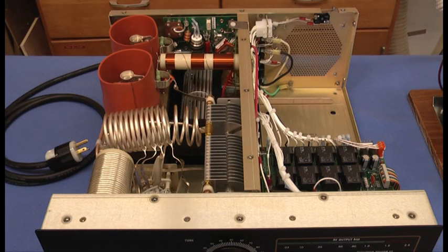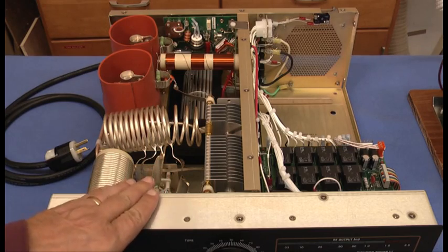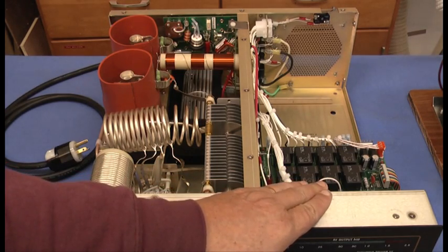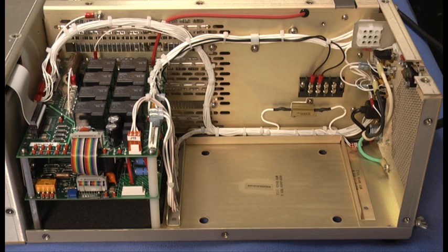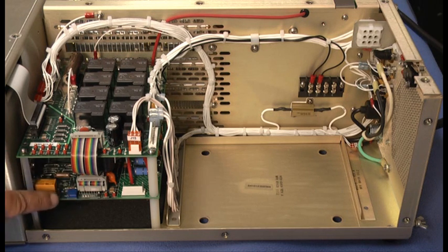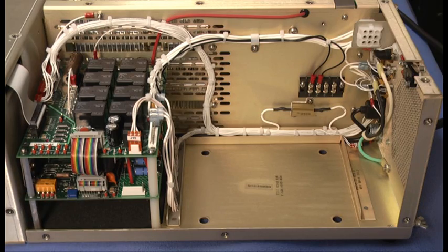The first thing we note about the amplifier is that the chassis is divided into two halves, the RF side and the power supply and circuitry side. On the power supply side, we notice two circuit boards, a power main and a high voltage board. These will later be connected to the output of the high voltage transformer.